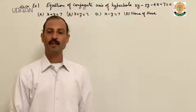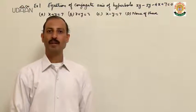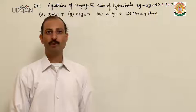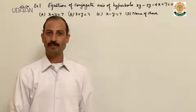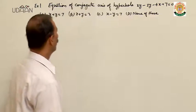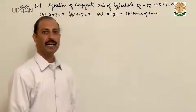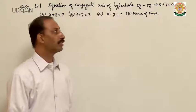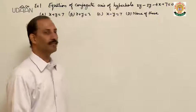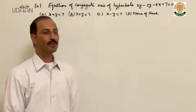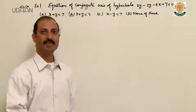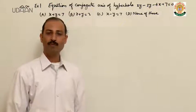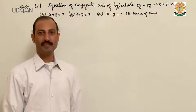Greetings children. We have done the hyperbola, now we are doing the practice of the questions. First question I am taking: equation of conjugate axis of the hyperbola xy minus 3y minus 4x plus 7 equal to 0. You have to identify the equation of conjugate axis.